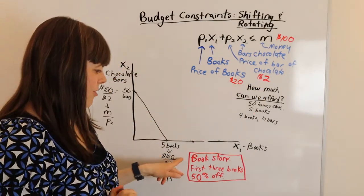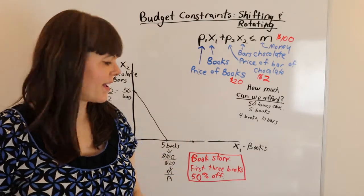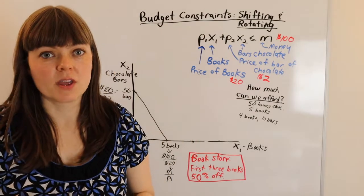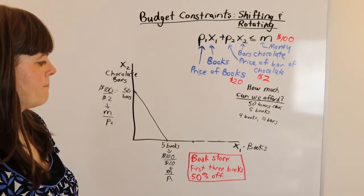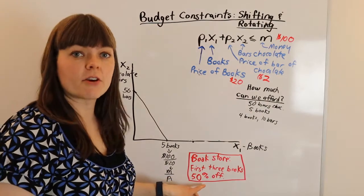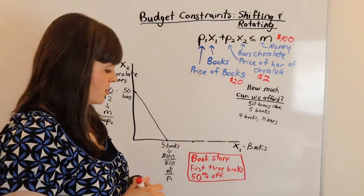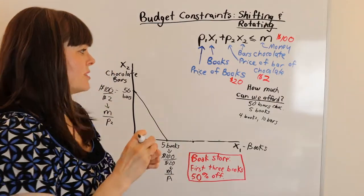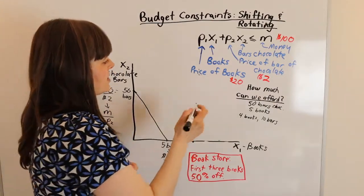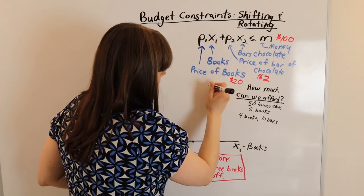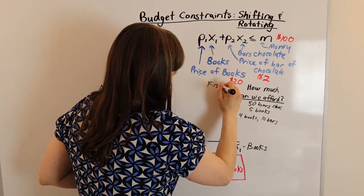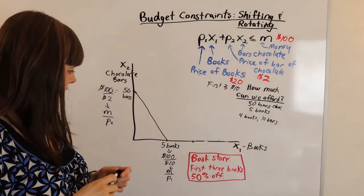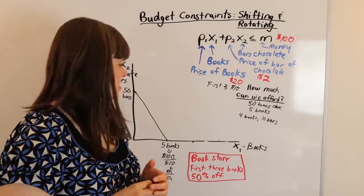But the bookstore has this offer where the first three books you buy are sold at 50% off. So in which case, the price per book of those first three books is $10. So we're not crossing out the old price, because after three books, we still have to pay the full $20 price. But the first three have a price of $10. So now we want to think about how does that change the budget constraint?